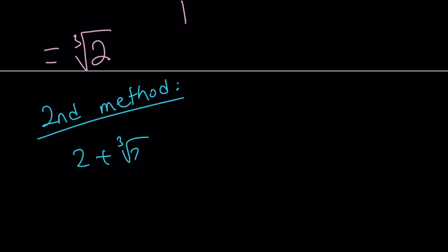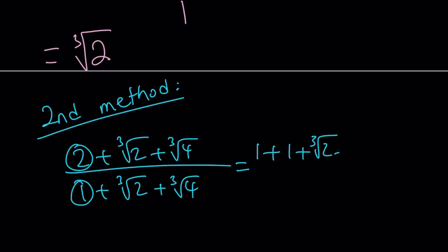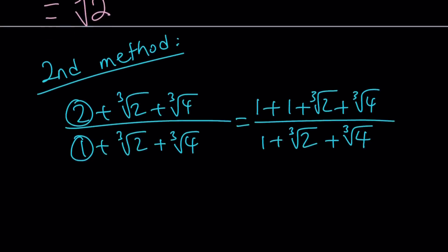2 plus cube root of 2 plus cube root of 4 divided by 1 plus cube root of 2 plus cube root of 4. One of the things that I noticed after coming up with this problem is that the top is one more than the bottom. And you're like, duh, that is not obvious. Yes, it is. But maybe it's not always obvious. But it's really nice. I can use this. The only difference is 1.